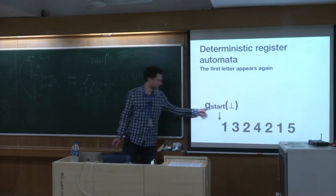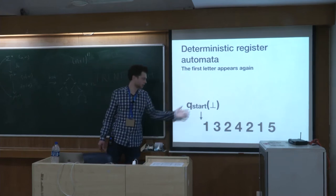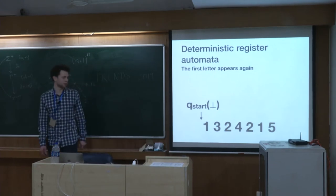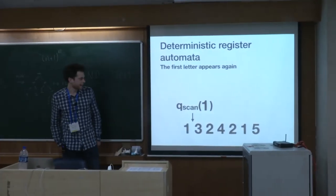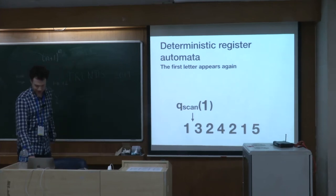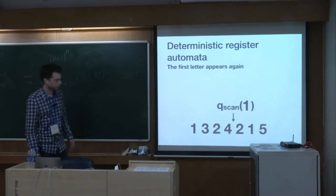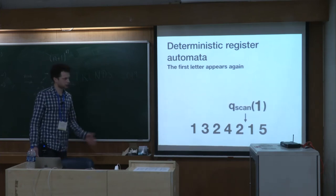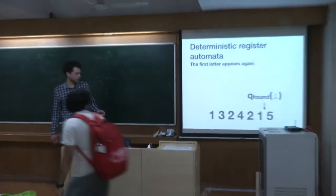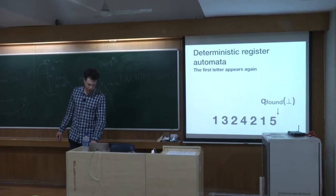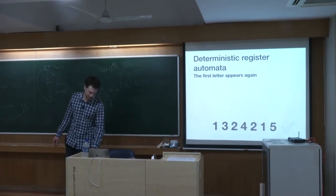An automaton like this has a state from a finite set of states and a set of registers. In this particular case, the automaton will have only one register and at the beginning it is empty. We go through the word and can store letters in that register. To recognize this language, we go through the word and look for the letter. For example, if one is not equal to two, we do nothing, just go forward. But at some point we meet a letter equal to what we have in our register, so we go to a special state 'found.' We then continue to the end of the word, and if we are in that state after the last letter, we know we have found it.